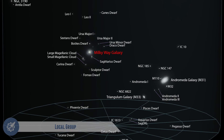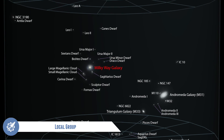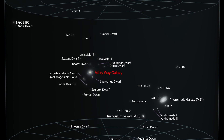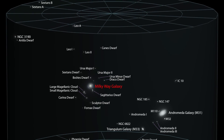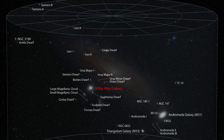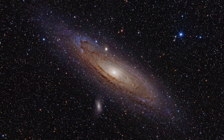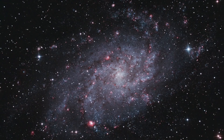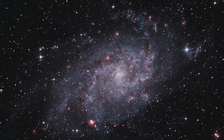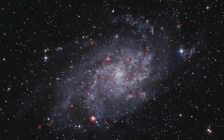Our Milky Way galaxy is part of the local group of galaxies, which is a group of galaxies that are gravitationally bound. The Andromeda galaxy is the largest within the local group, followed by the Milky Way and the Triangulum galaxy. There are also around 30 other smaller galaxies within this group.